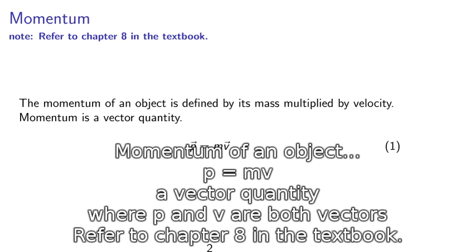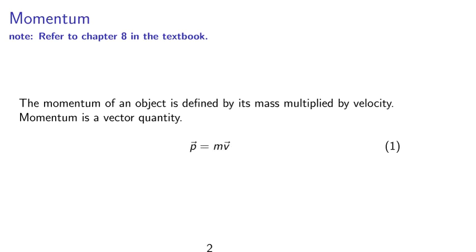Momentum. The momentum of an object is defined by its mass multiplied by velocity. Momentum is a vector quantity, p equals mv, where p and v are both vectors. Please refer to chapter eight in the textbook.